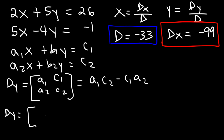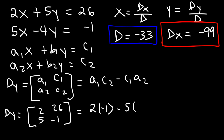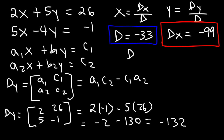Now a1 is 2, a2 is 5, c1 is 26, c2 is negative 1. So it's going to be 2 times negative 1, minus 5 times 26. 2 times negative 1 is negative 2. 5 times 20 is 100, 5 times 6 is 30, so 5 times 26 is 130. And negative 2 minus 130 is negative 132. So dy is equal to negative 132.